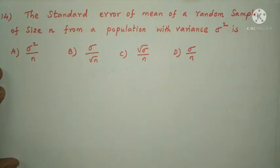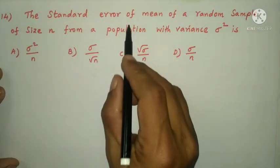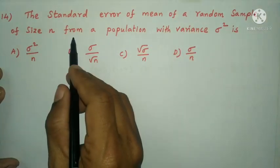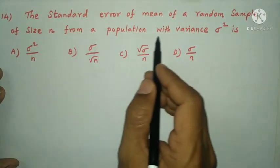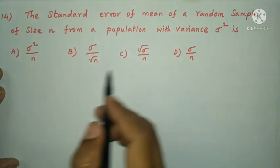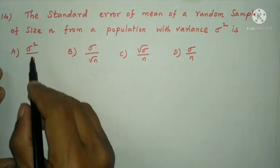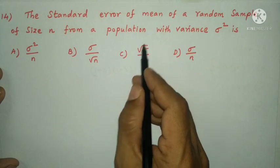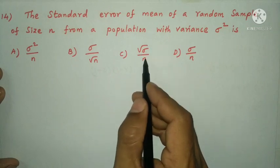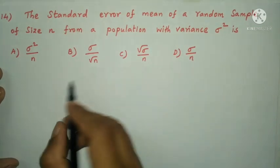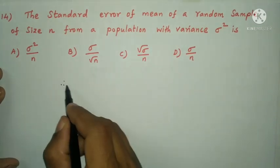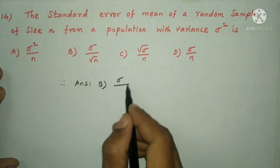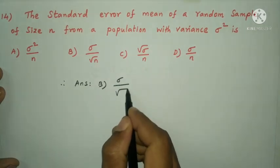Next question: the standard error of mean of a random sample of size n from a population with variance σ² is σ/√n. The answer is option B, sigma by root n.